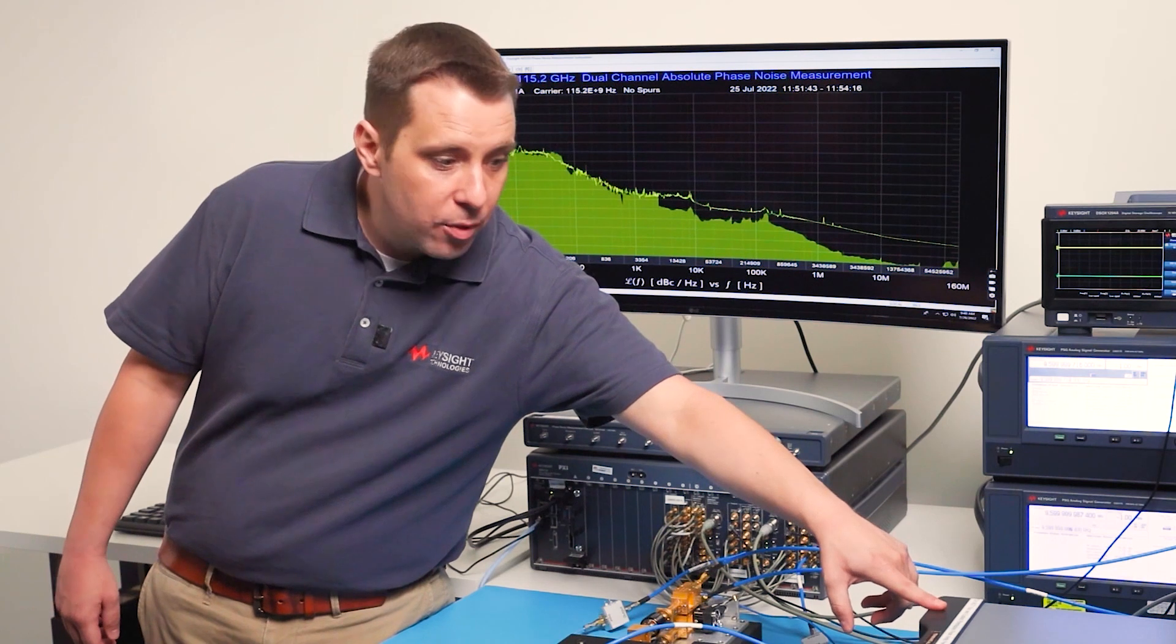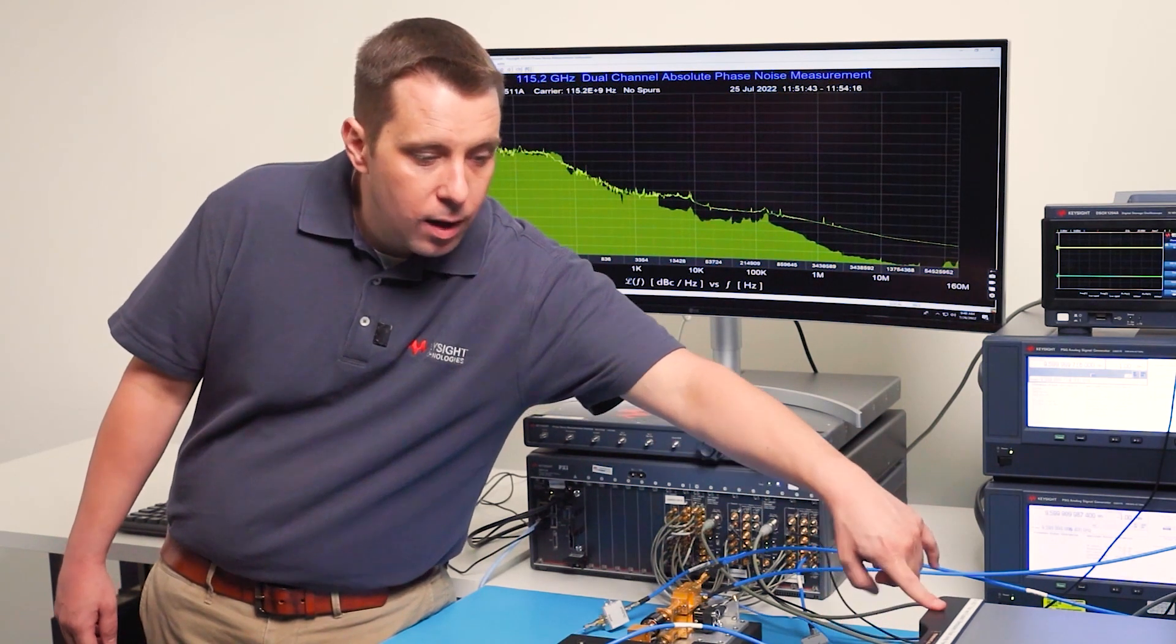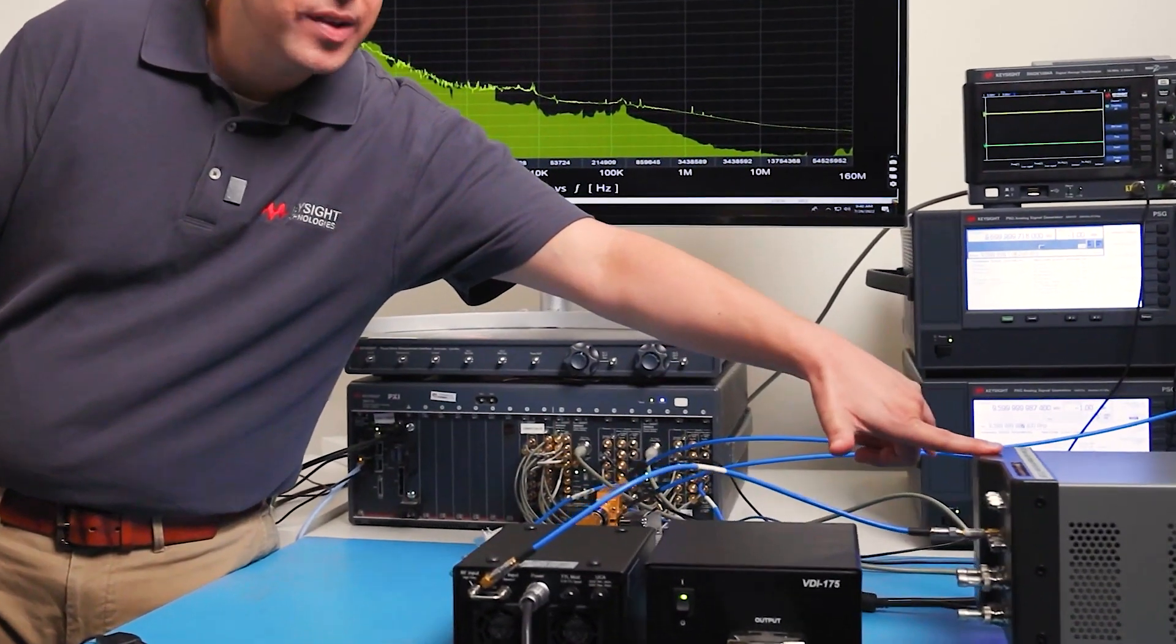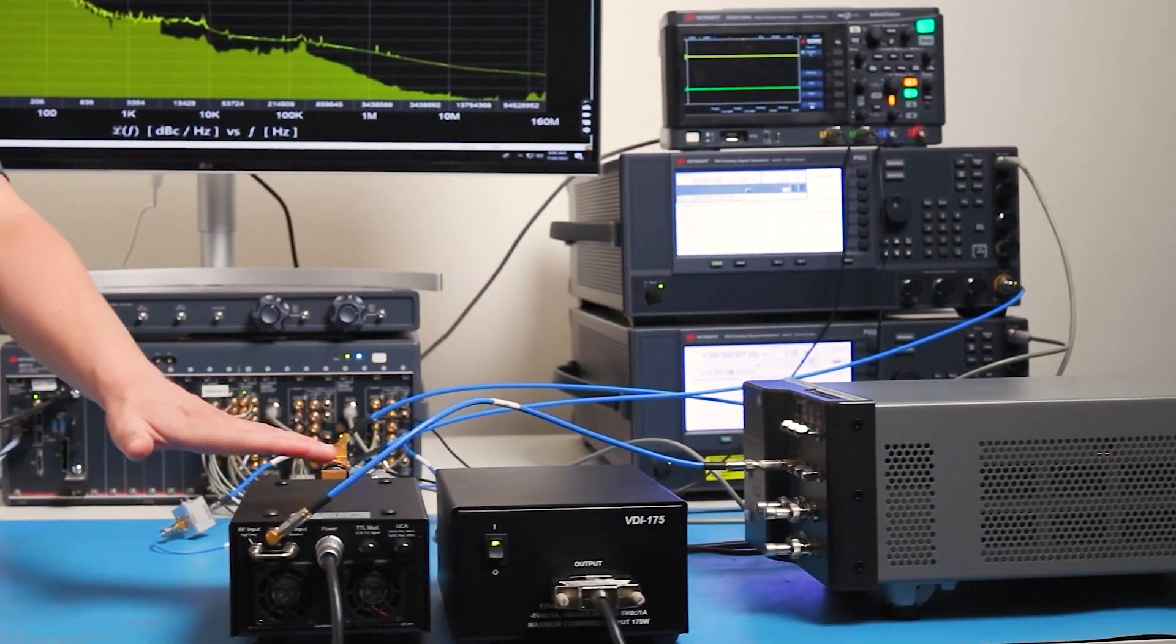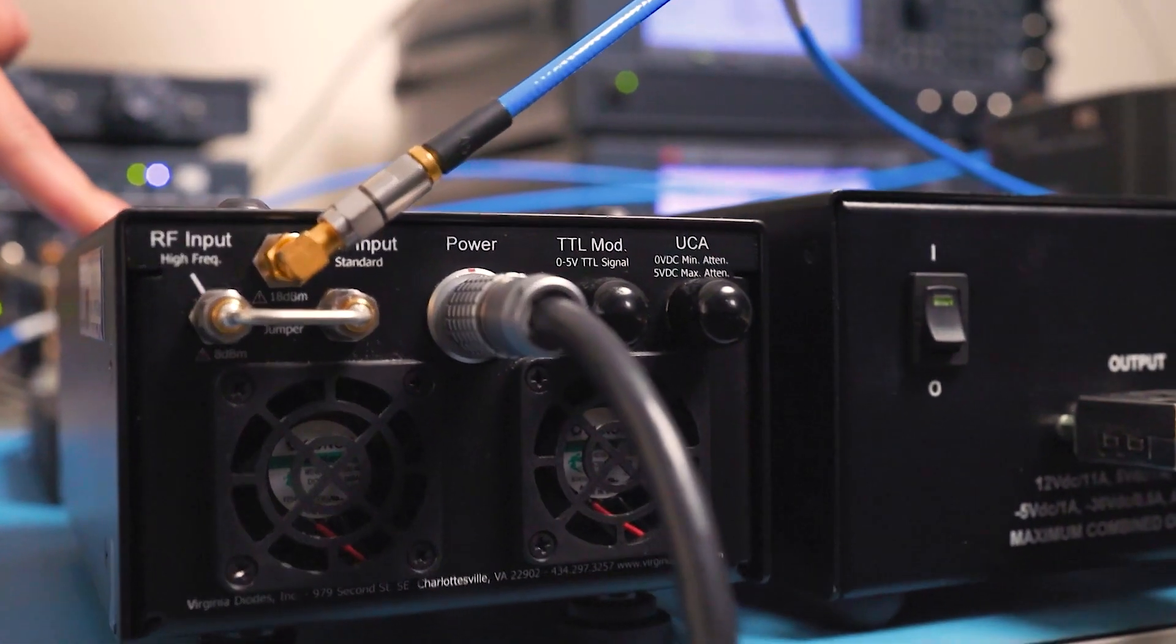Here we have an extremely high performance low phase noise oscillator that puts out a fixed frequency 9.6 gigahertz sinusoid. We then multiply that up with an active times 12 multiplier from VDI.